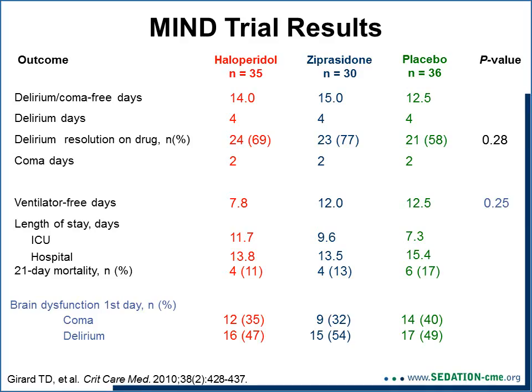A pilot study randomized patients to receive haloperidol, ziprasidone, or placebo. Looking at delirium-free days, coma-free days, delirium days, coma days, ventilator-free days, length of stay, and mortality, there were no differences between the three groups. On day one, coma was present in about 30 to 40% and delirium in about 50% of all groups. It was unclear whether this was a prevention or treatment study, and it did not show a dramatic effect. A larger version of this study is now underway.